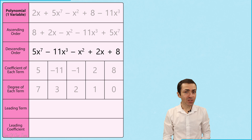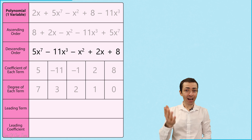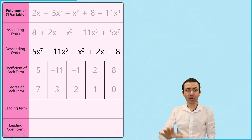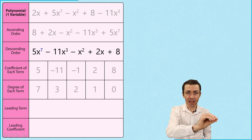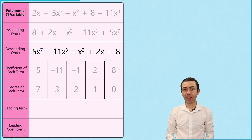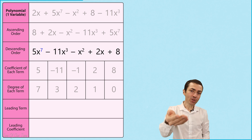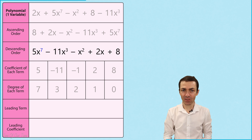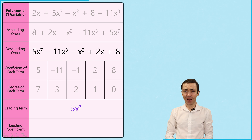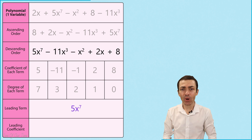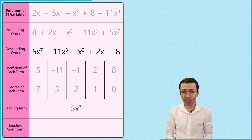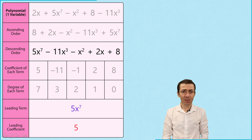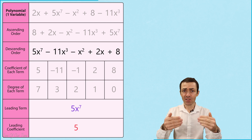The leading term is the term that has the highest degree. And if we've written the polynomial in descending order, then it will be the first term, which in this example is 5x to the power of 7. And finally, the leading coefficient is simply the coefficient of the leading term, which in this example is 5.